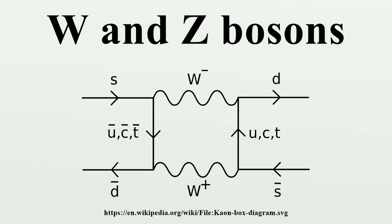The emission of a W+ or W- boson either raises or lowers the electric charge of the emitting particle by one unit, and also alters the spin by one unit. At the same time, the emission or absorption of a W boson can change the type of the particle, for example changing a strange quark into an up quark. The neutral Z boson cannot change the electric charge of any particle, nor can it change any other of the so-called charges. The emission or absorption of a Z boson can only change the spin, momentum, and energy of the other particle.